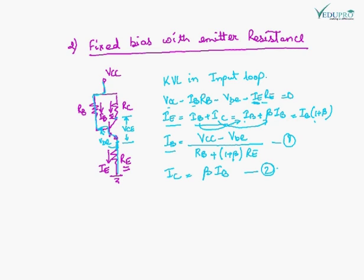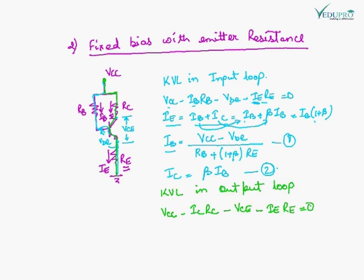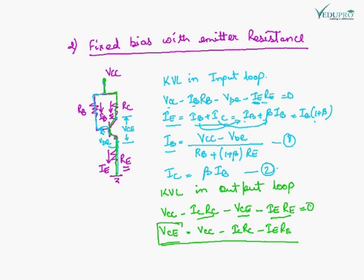Applying KVL in the output loop — from VCC through RC, through the collector-emitter junction, through RE to ground — gives: VCC minus IC·RC minus VCE minus IE·RE equals zero. Therefore VCE equals VCC minus IC·RC minus IE·RE. With this, we know the operating point of the fixed bias with emitter resistance circuit.